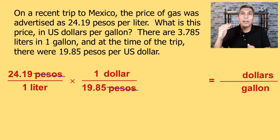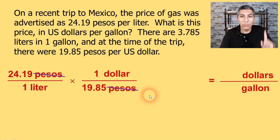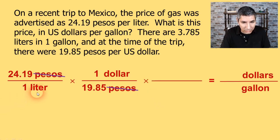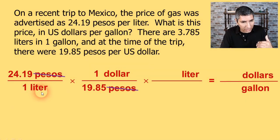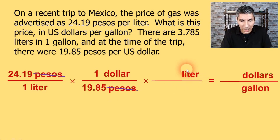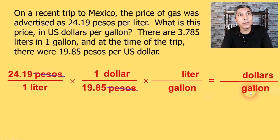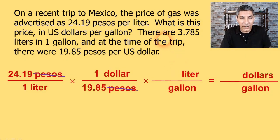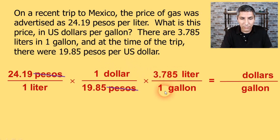If I were to stop right here, I'd be in dollars per liter — but I want to be in dollars per gallon, so I have one more conversion factor to do. I'm going to put liters on the top this time, because the unit needs to be on the opposite side of the conversion factor so it will cancel. Liters goes on top and gallons on the bottom, because I want gallons in the denominator of my answer. The problem tells us there are 3.785 liters in one gallon, so I write 3.785 liters for one gallon. Now I can cancel liters top and bottom.